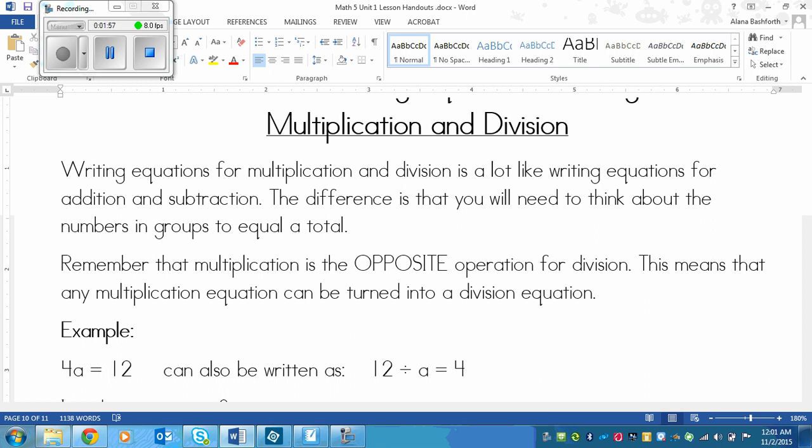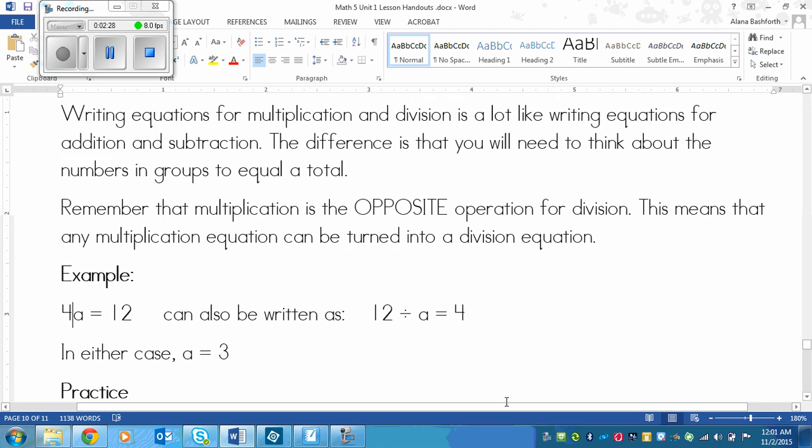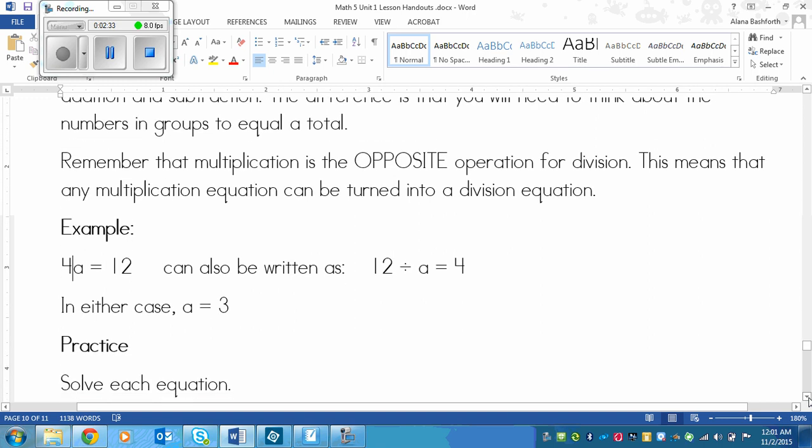So you just take it out of there and you have 4 times a, or you could say 4a equals 12. In this case a would equal 3 because 4 times 3 equals 12. This can also be written as 12 divided by a equals 4. I know this is right because a could be 3 in this case as well. So 12 divided by 3 would equal 4. In either case it is 3. Those are mirrored equations.